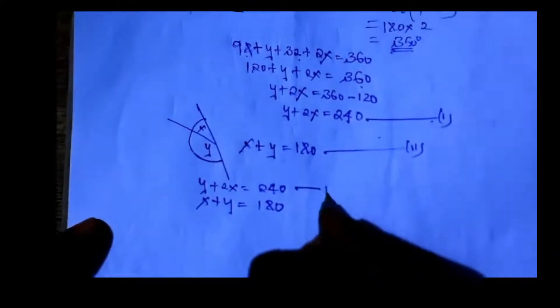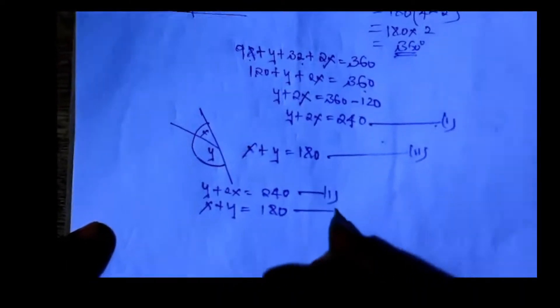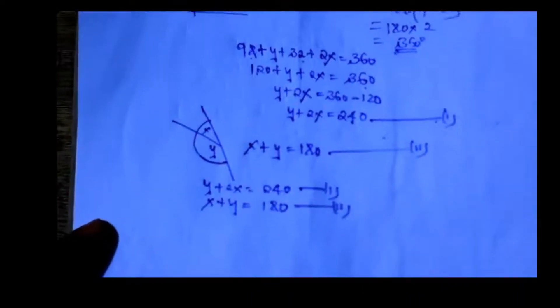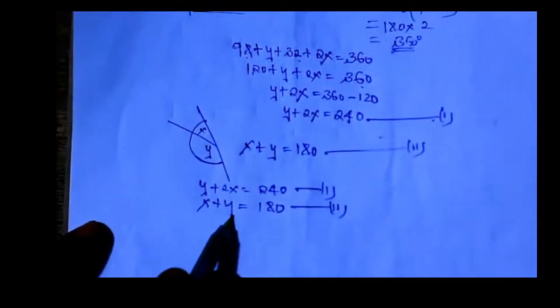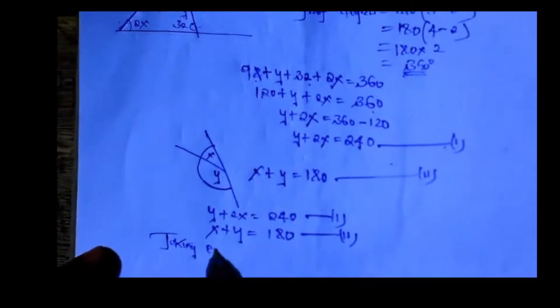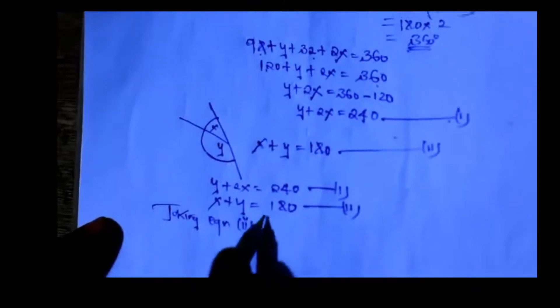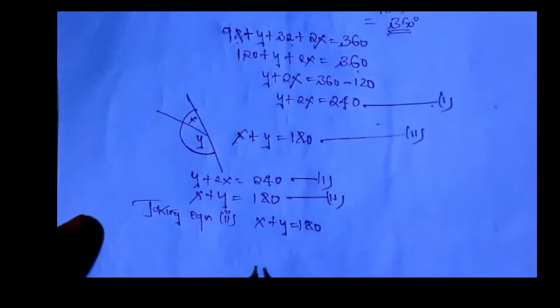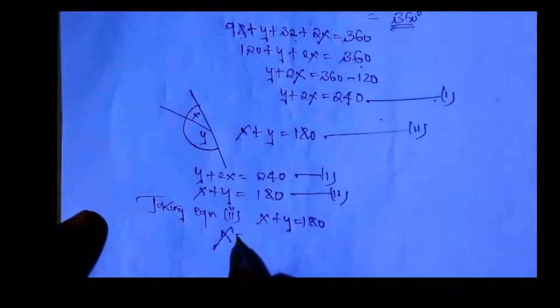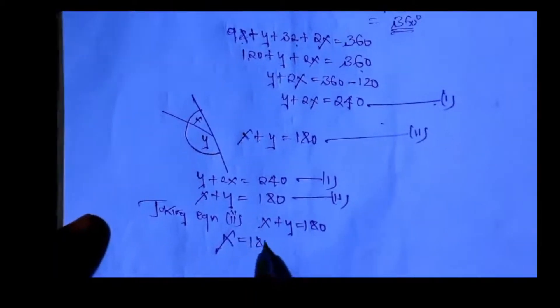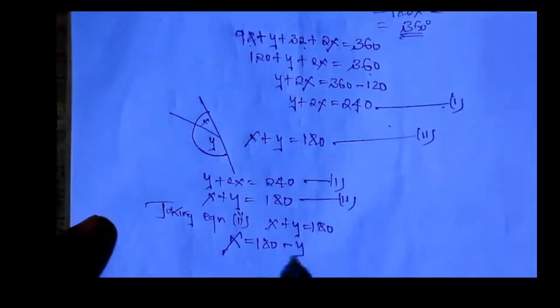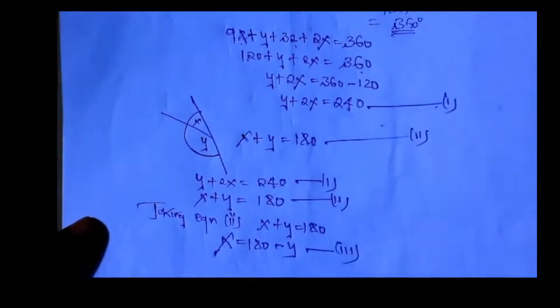Let us solve by substitution. Taking equation number 2: X plus Y equals 108. Make X the subject: X equals 108 minus Y. This is equation number 3.